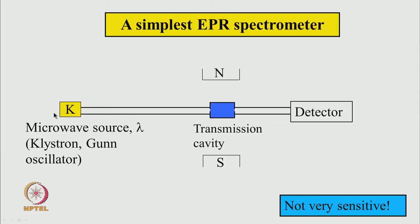Microwave power comes from some source — it could be a klystron oscillator or a GAN oscillator. The sample is kept inside a transmission cavity. Microwave enters through this iris here and comes out through a waveguide to the detector, and this sample is kept in the magnetic field. By scanning the magnetic field, one can see the spectrum.